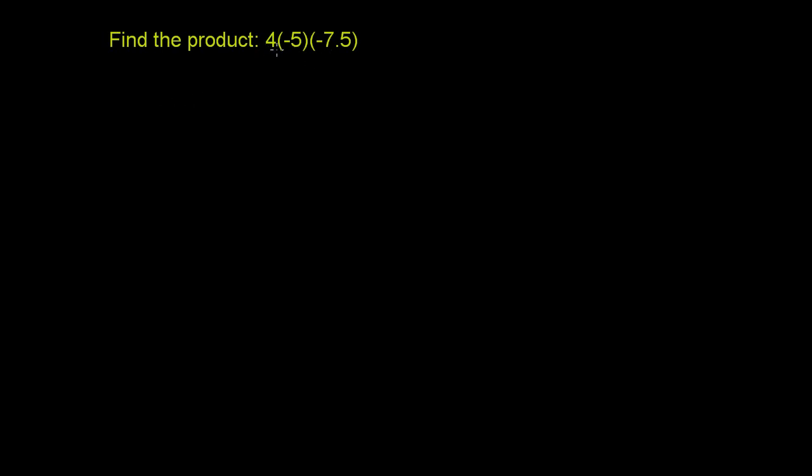So let's start with the 4 times the negative 5, and then we'll multiply whatever we get there times negative 7.5. So let's just rewrite the problem. We have 4 times negative 5 times negative 7.5. I really don't have to write that dot there. If you just have 4 and then in parentheses a negative 5, that means 4 times negative 5.